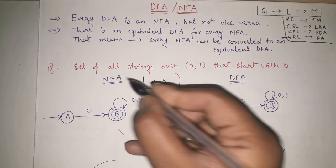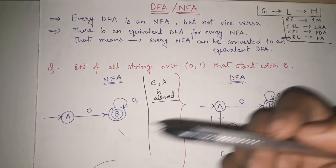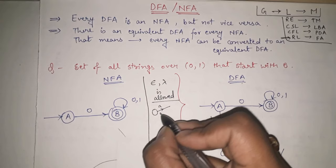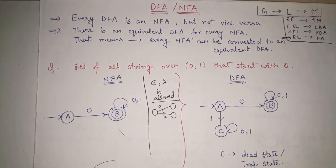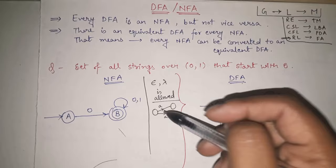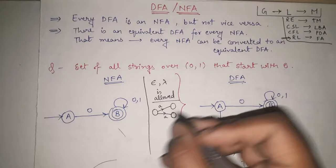The second difference: in NFA, multiple choices are allowed, but not in DFA. What do we mean by multiple choices? For example, from one state, using the same input 'a', you can go to two different states. So we have multiple options for the same input symbol. This is not possible in DFA — from any state, one input must lead to exactly one state.